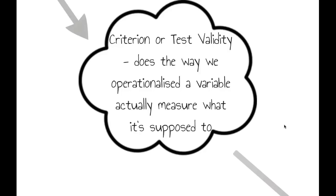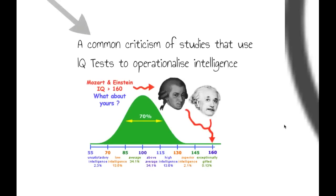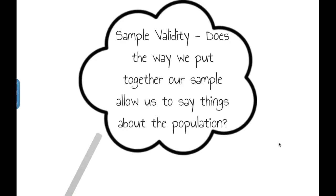Then we get criterion or test validity. Does the way we operationalise the variable actually measure what it's supposed to? If we were looking for correlation between intelligence and academic achievement, we might use an IQ test to operationalise intelligence. But lots of people have pointed out that an IQ test doesn't necessarily test intelligence, because if IQ measures intelligence, then intelligence would be constant and you wouldn't get better at IQ tests by practice, but of course you do.